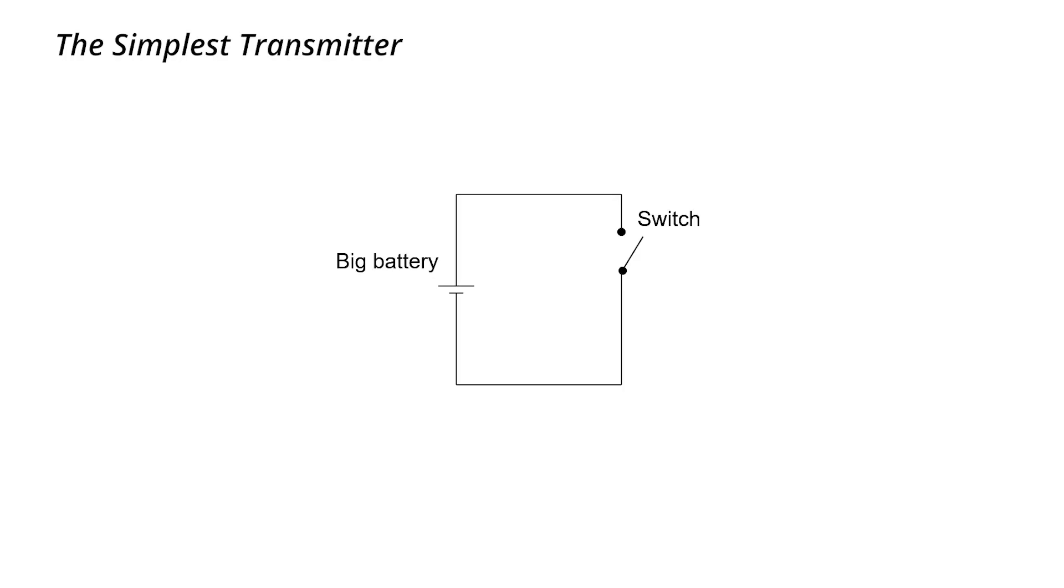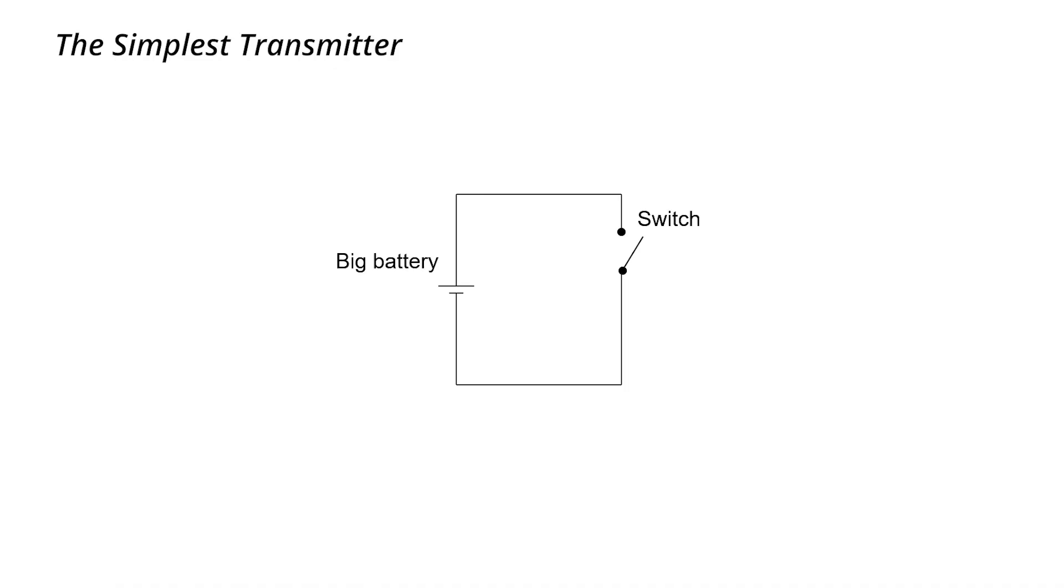Let's take a look at the circuit diagram. It's just a battery in series with a switch. Now initially, the electrons are not moving at all. The current is zero. There's no radio wave released.